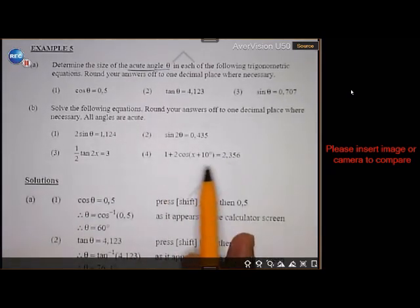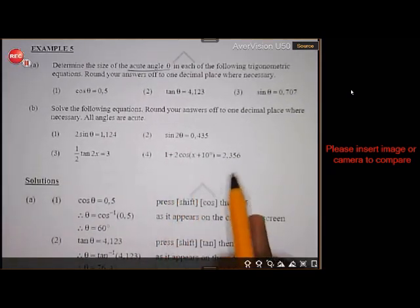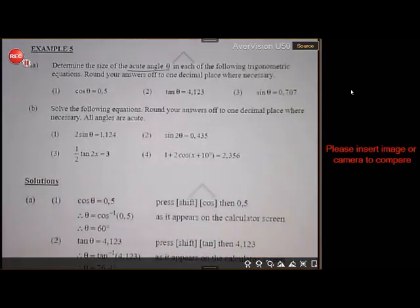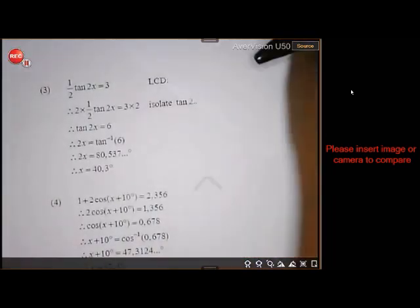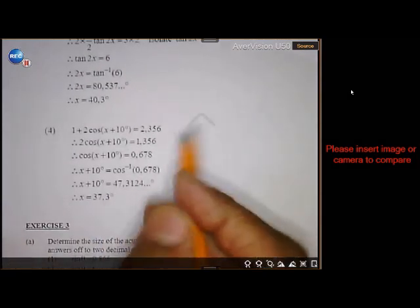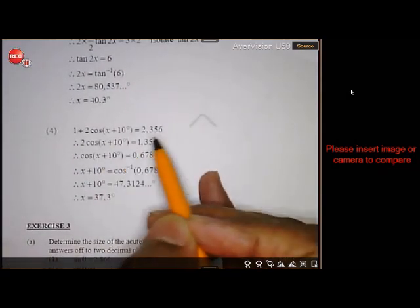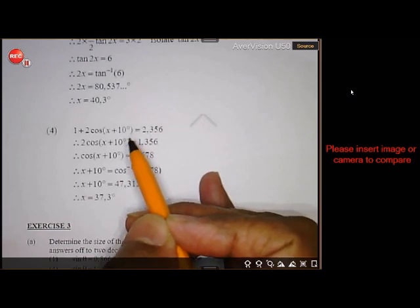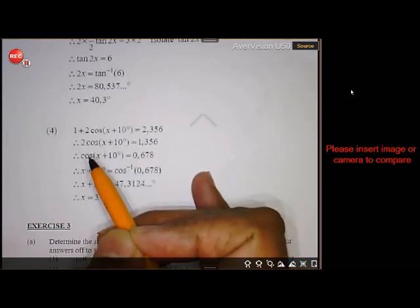There's quite a lot of stuff happening here. So here you'll first take the 1 over, and then divide by 2. So let's see. So we're first going to take the 1 over. So you take the 1 over. You subtract 1, and you get this value. Then you divide by 2.